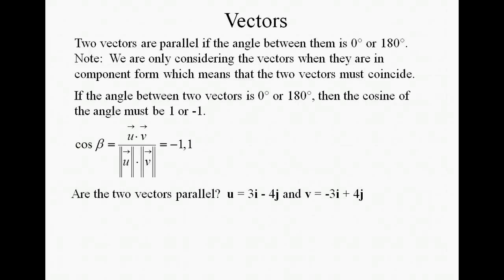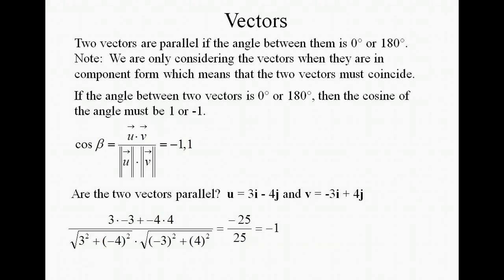So let's look at this example where we have vector u, which is 3i minus 4j, and vector v, which is negative 3i plus 4j. Plugging into our cosine of beta formula, we're first going to find the dot product of the two vectors and divide it by the magnitude of the two vectors. Both vectors have a magnitude of 5, so we end up with 25 in the denominator. Figuring our dot product, we got negative 25. So our ratio is negative 1. Since the cosine of beta is equal to negative 1, the angle must be 180 degrees between the two vectors, which means that they're parallel.